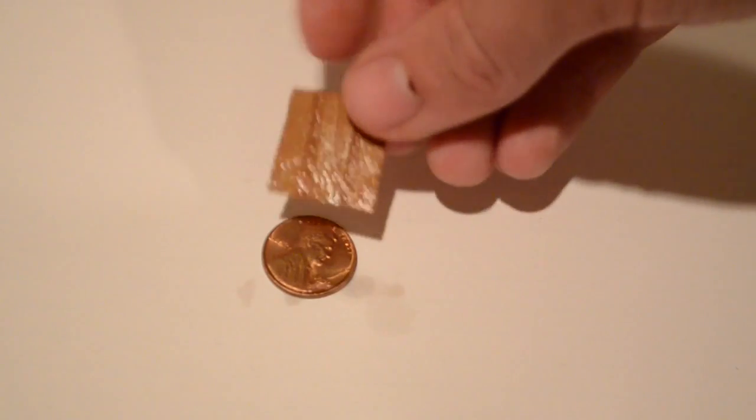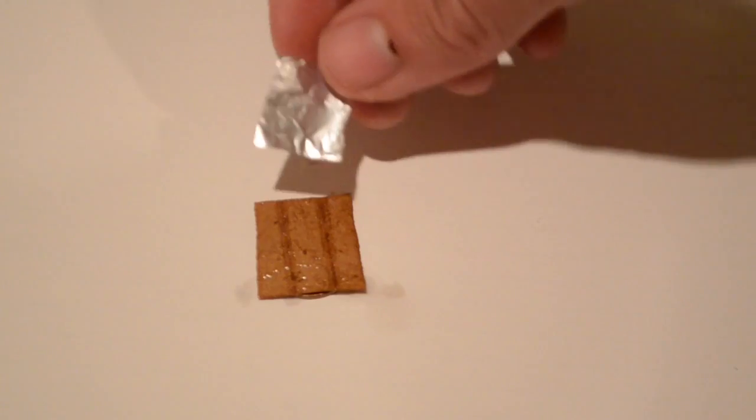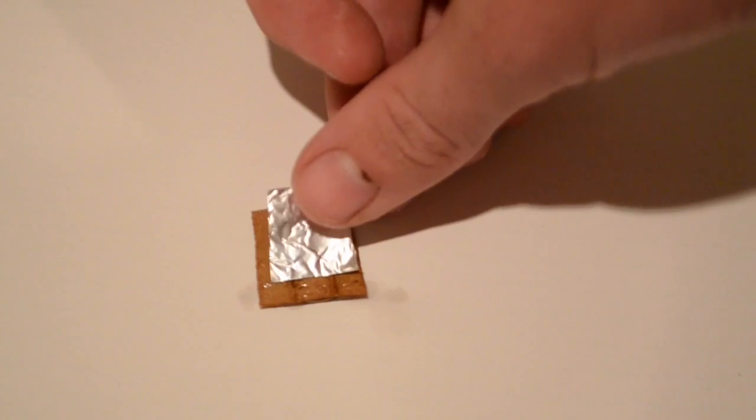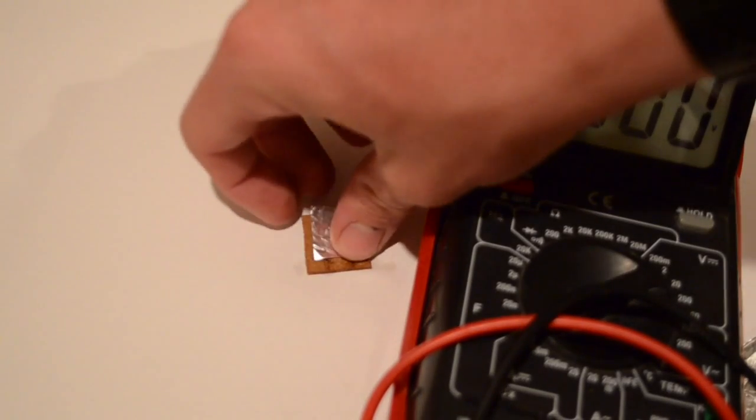Now that we have our three ingredients made for this battery, we can go ahead and build it. First, I'm going to place one of our vinegar-soaked cardboard papers on top of a penny. And next, I'm going to take one of our squares of aluminum and place it on top of that. And that's all we need right here for a single battery cell.